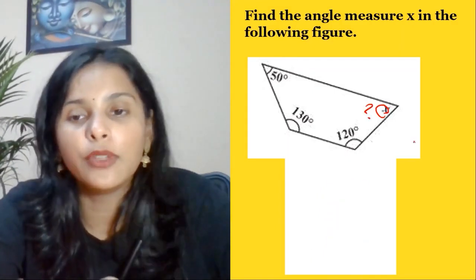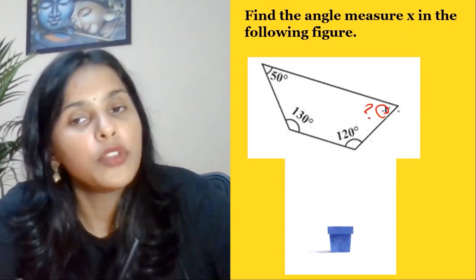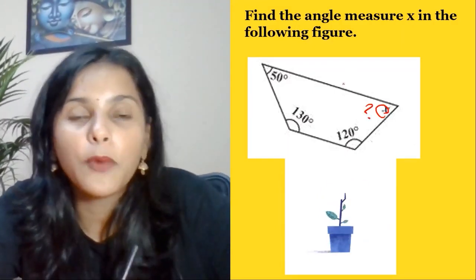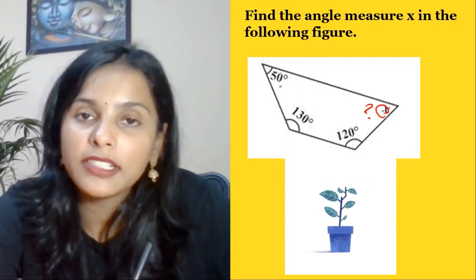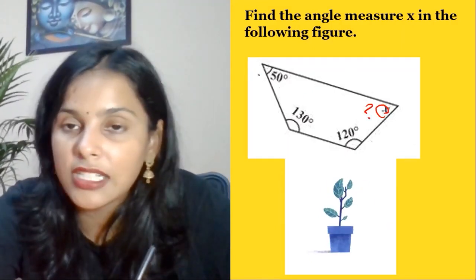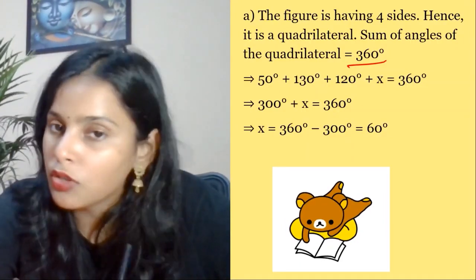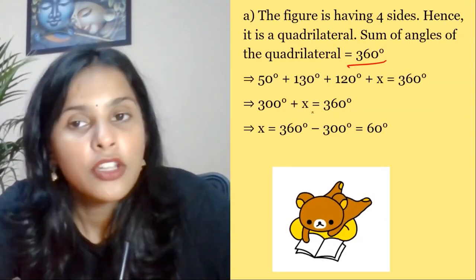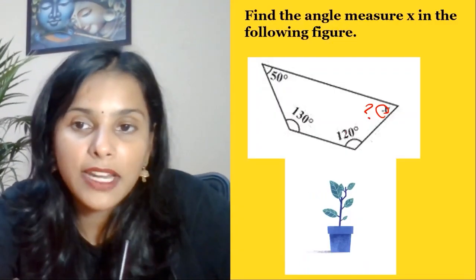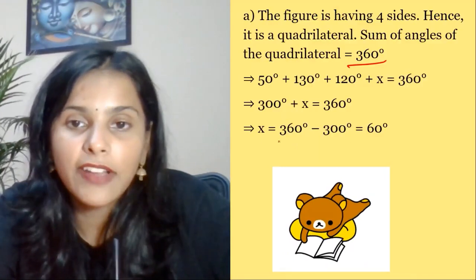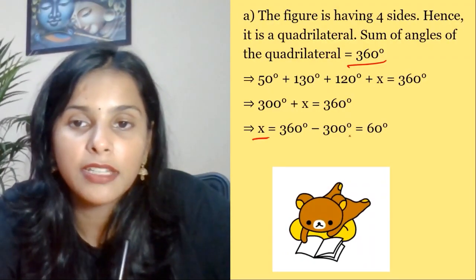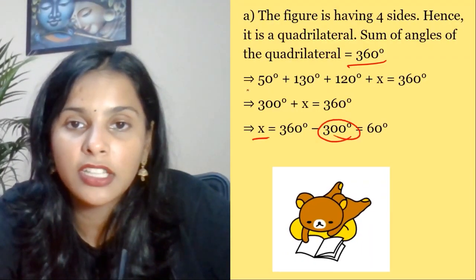Next question: find the value of x. We know that the interior angles of a quadrilateral sum to 360 degrees. So sum them up: x equals 360 minus 300, which gives x equal to 60 degrees.